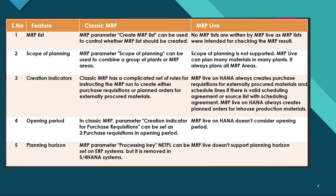If we talk about MRP list: in classical MRP, the parameter 'create MRP list' can be used to control whether an MRP list should be created or not. Whereas in MRP Live, no MRP lists are written, as the lists were intended for checking the MRP result.